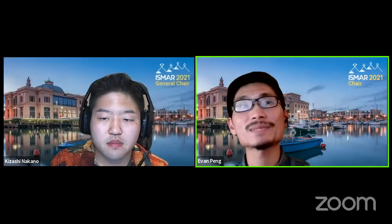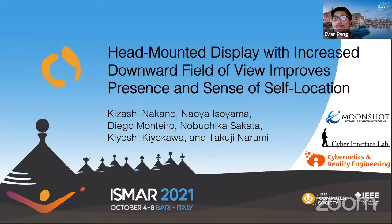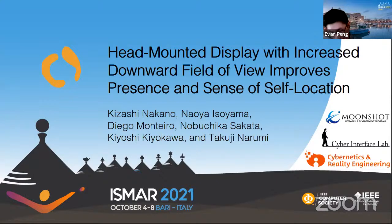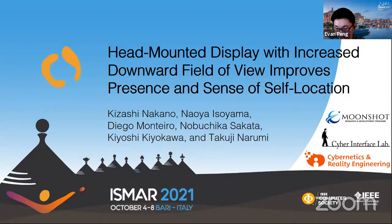The next paper is: Head Mounted Display with Increased Downward Field of View Improves Presence and Sense of Location. The authors are Kizashi Nakano, Nayo Isoyama, Diego Montero, Nobuchika Sagata, Kiyoshi Kiyokawa, and Takuji Narumi. The speaker is Kizashi Nakano. Let's welcome.